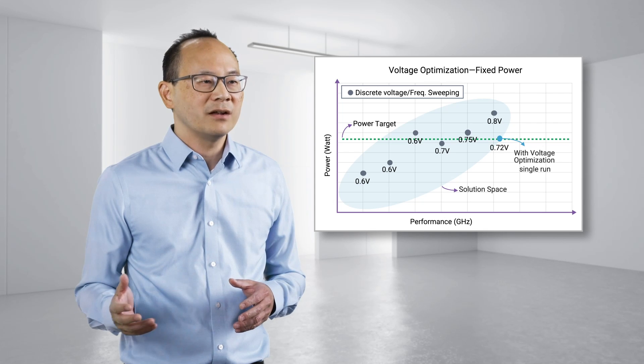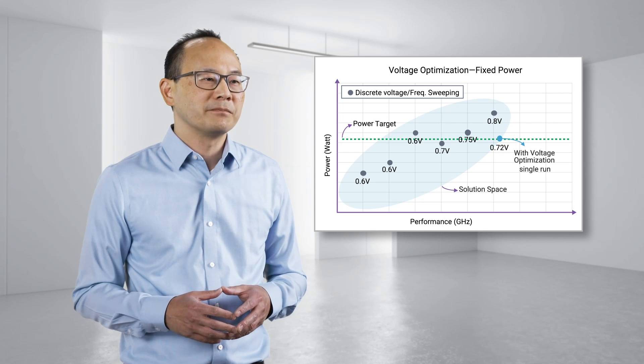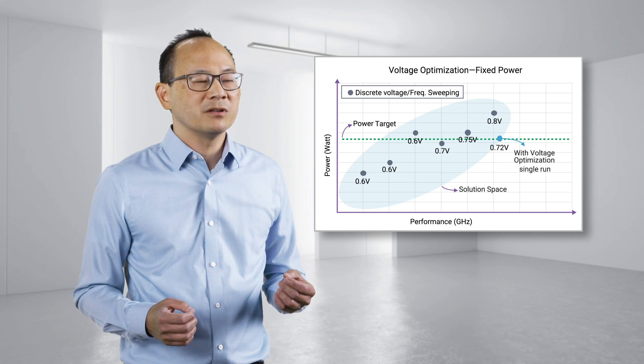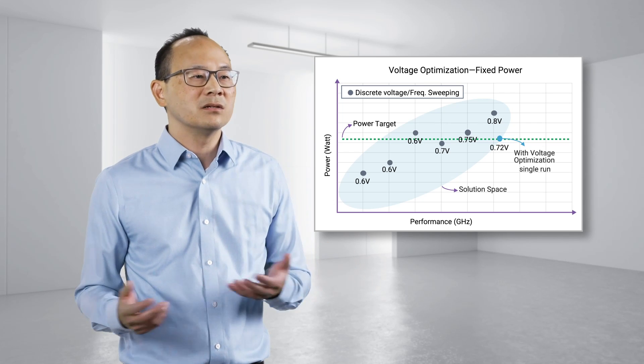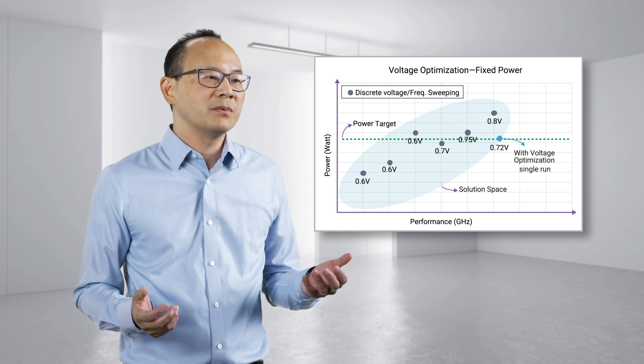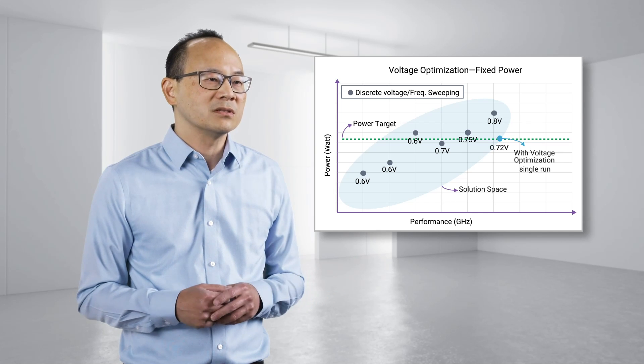Alternatively, in a design flow with a fixed total power target, the optimization engine can explore the voltage range and find the best possible frequency that meets the power target within a single run, which may not have been achieved otherwise due to time and resource constraints.